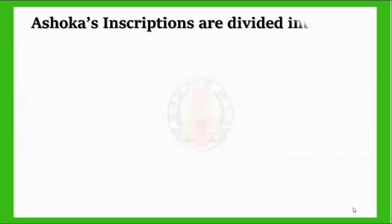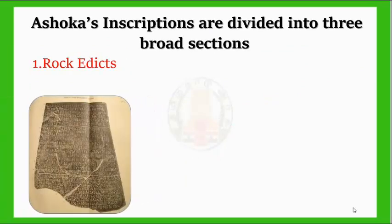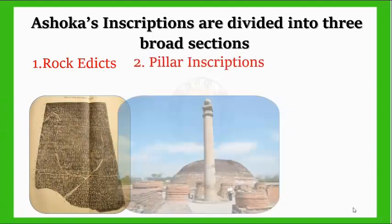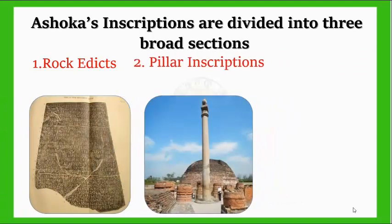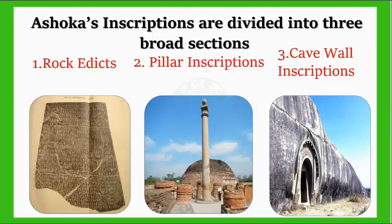Asoka's inscriptions are divided into three broad sections: 1. Rock Edicts, 2. Pillar Inscriptions, and 3. Cave Wall Inscriptions.